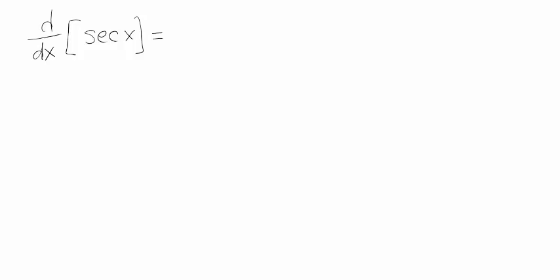Remember that secant is the same as 1 over cosine. Now looking at this, I see that I can just use the quotient rule. If you are familiar with the chain rule, you can also write this in a slightly different way and use the chain rule. But since we haven't learned it yet, let's use the quotient rule. We're going to need to know the derivative of this top function and the derivative of this bottom function.